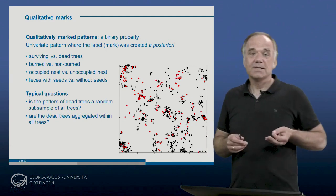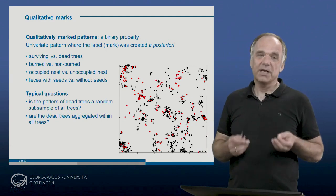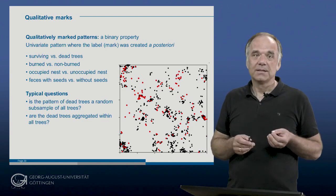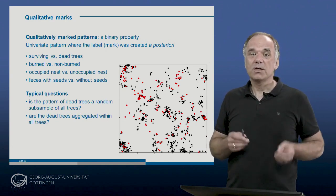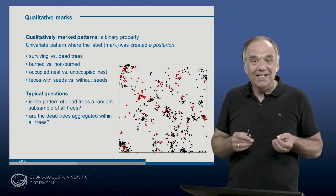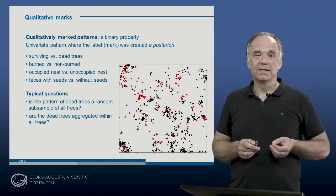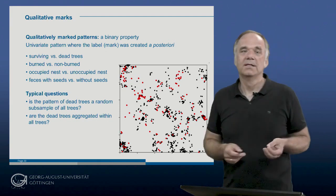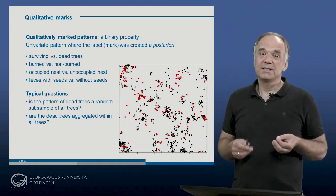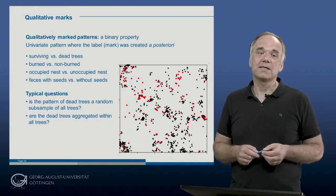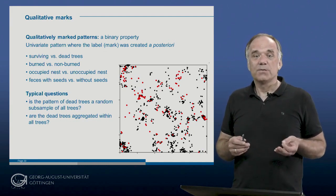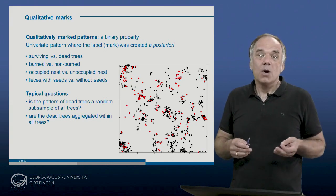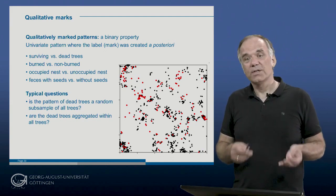In this type of analysis, one is not interested in the spatial structure of the univariate pattern, but in the spatial structure of the marks conditional on the univariate pattern. We are only interested in the properties of the second process. Typical questions are: Is the pattern of dead trees a random subsample of all trees? Or are dead trees aggregated within all trees?